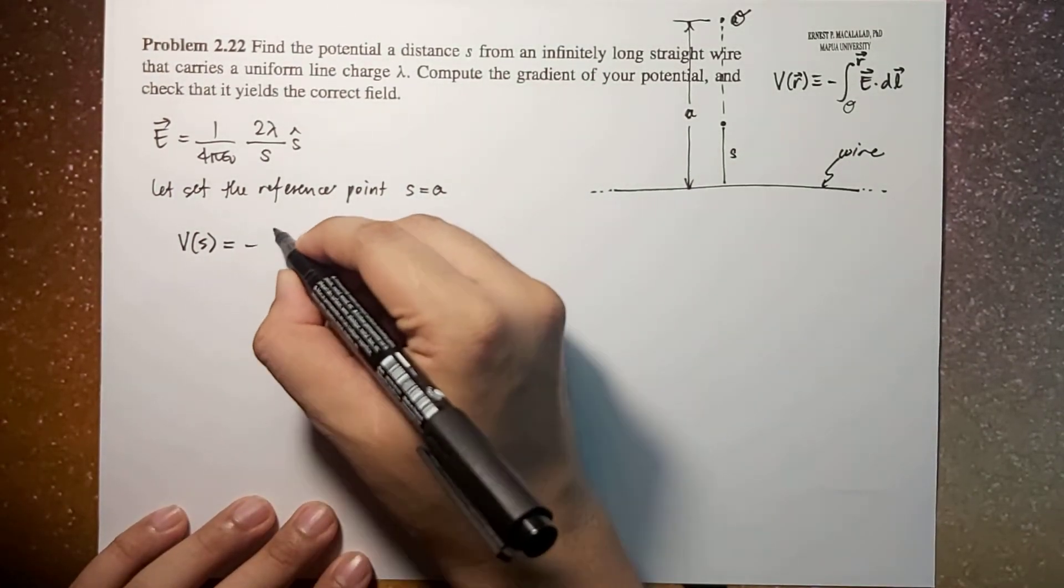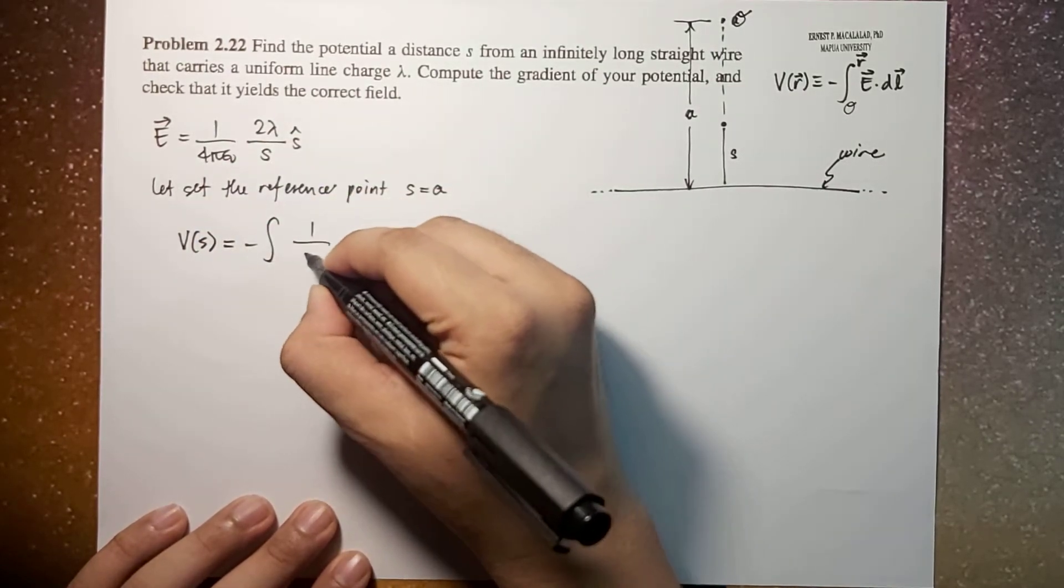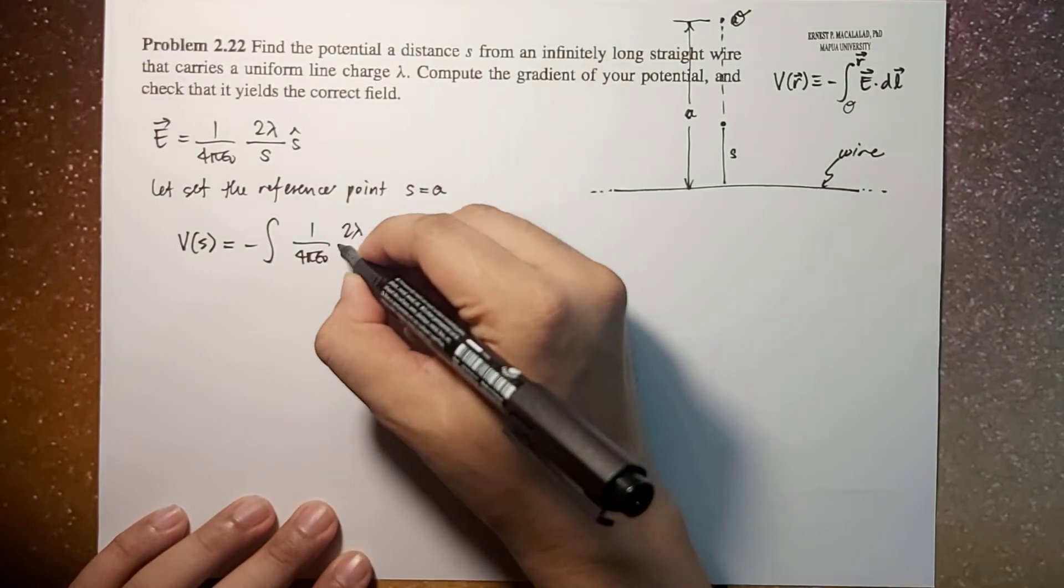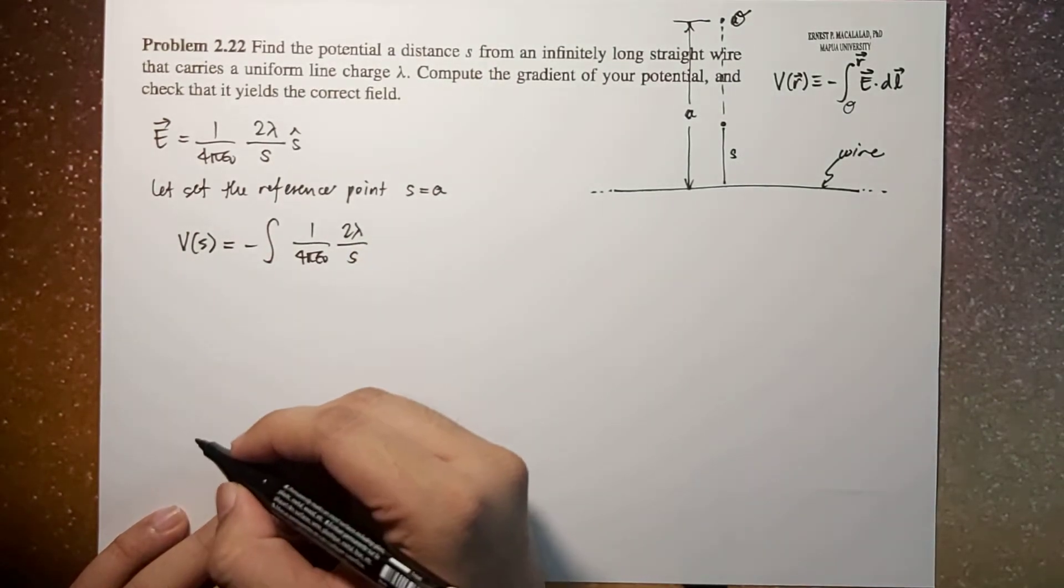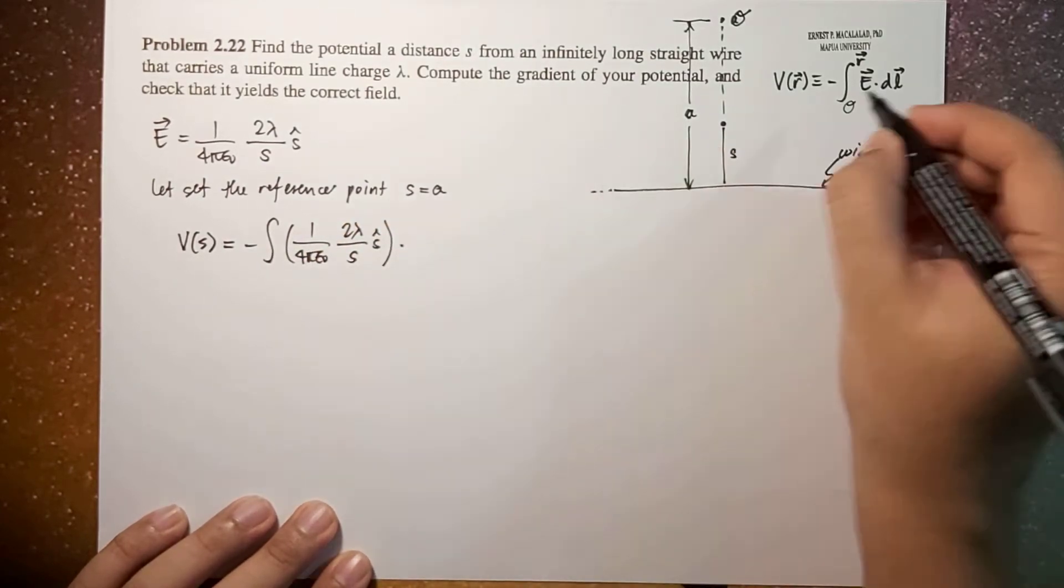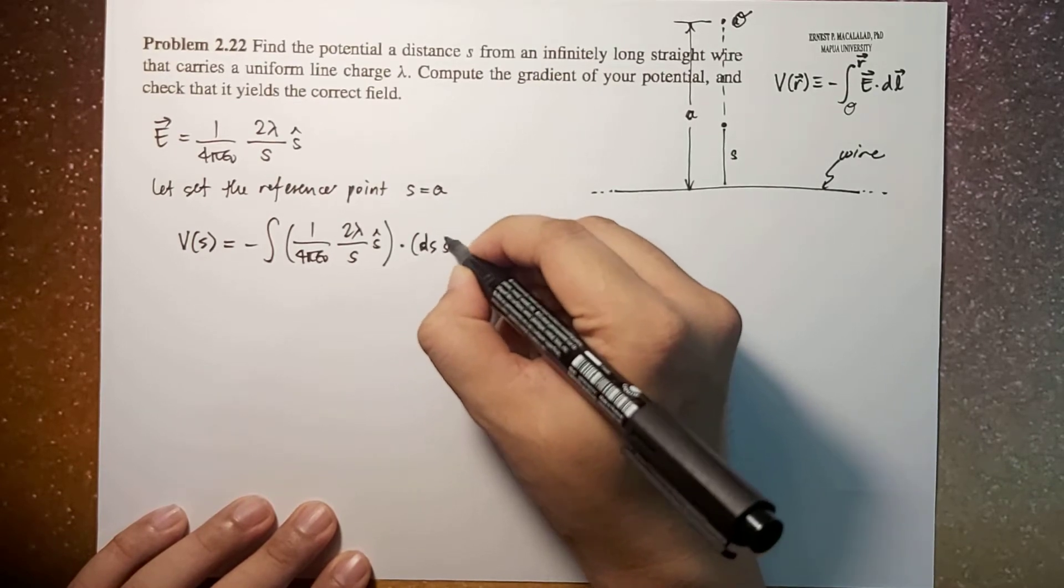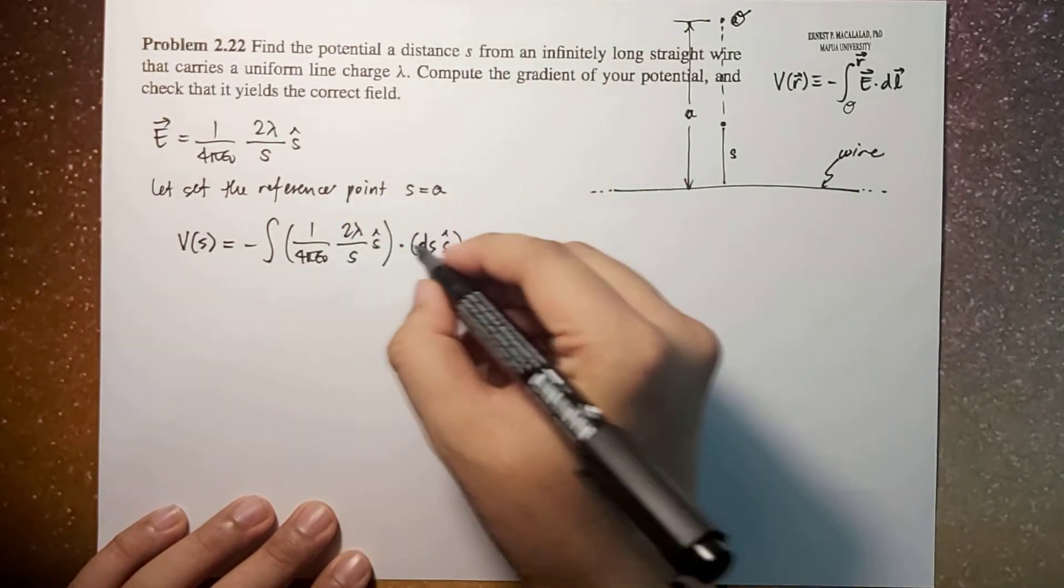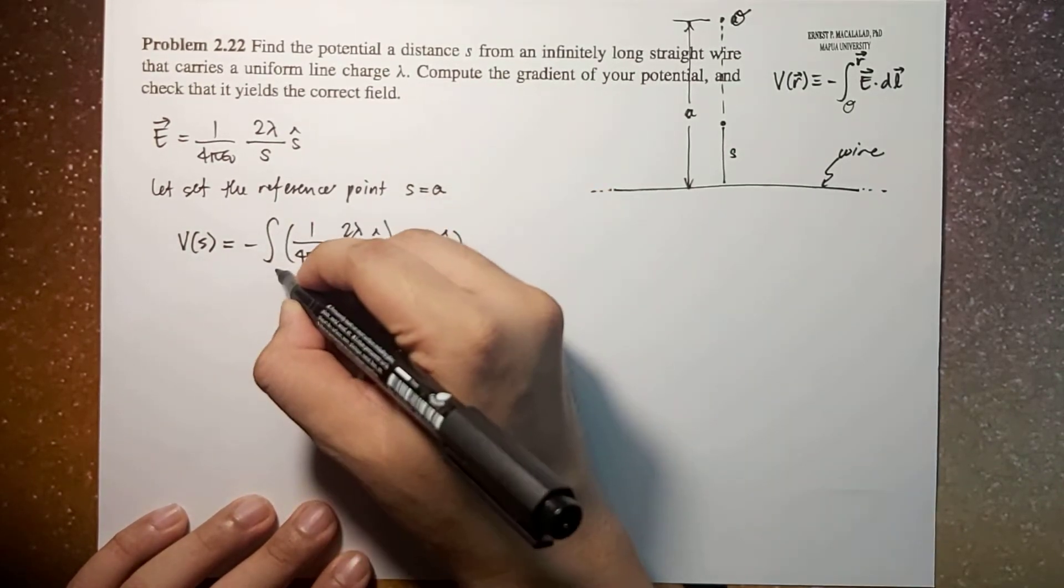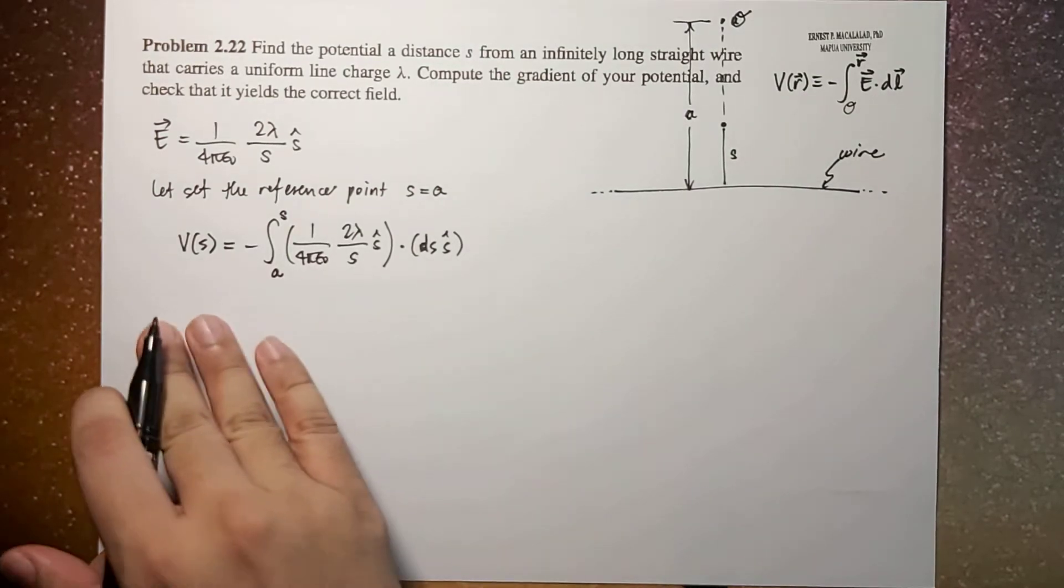So this is now equal to negative integral of electric field which is one over four pi epsilon naught times two lambda over s s hat dotted with dl which is ds s hat. Then the limits of integration will be from a to s. So that's how you set up your equation.